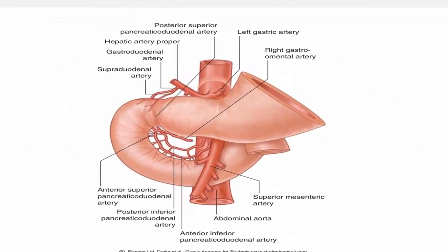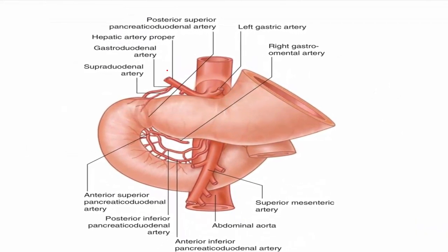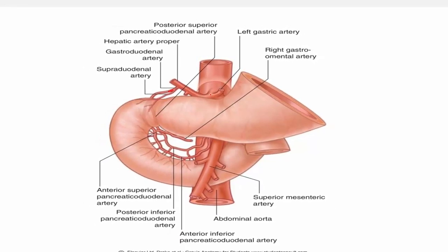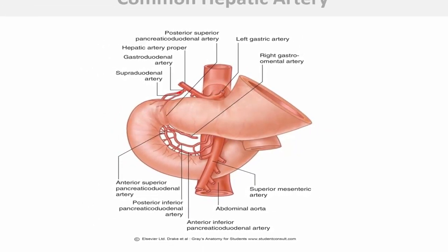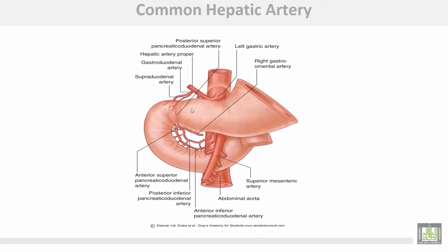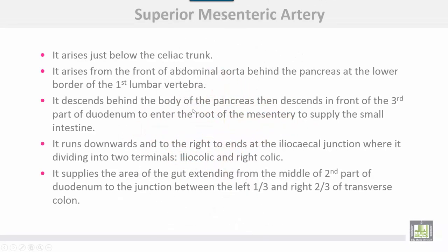This is the common hepatic artery, giving the supraduodenal branch and the right gastric from this area, showing the branches of the celiac trunk.